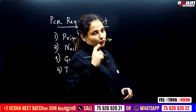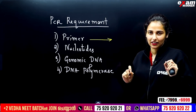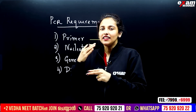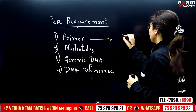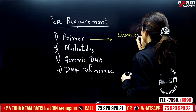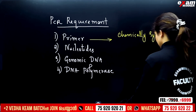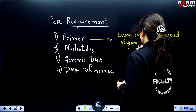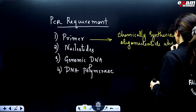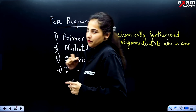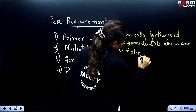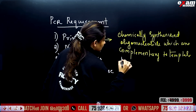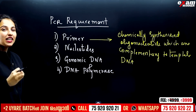What is the primer? The primer is an oligonucleotide sequence — a short fragment. It is complementary to the template DNA. Chemically synthesized oligonucleotides which are complementary to the parental strand. Template DNA is complementary to these fragments.